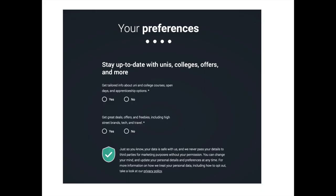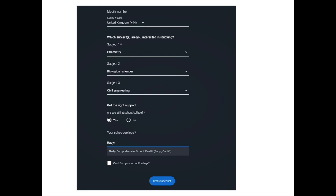You're then asked to enter your postcode, followed by a series of questions to set up your preferences for the UCAS hub. The first asks whether you'd like information sent to you about university and college courses, open days, and apprenticeships — tick yes if you would. You're also asked whether you'd like offers from high street brands, travel, and tech sent to you. Then you're asked to enter a mobile number and three subjects you might be interested in studying — don't worry too much about this as it can be changed later.